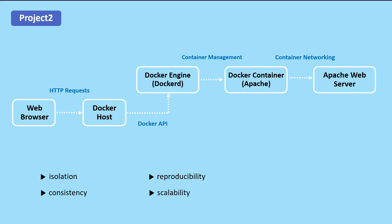Fourth is scalability. Docker containers can be easily scaled horizontally to handle increased traffic by deploying multiple instances of the same container. Fifth is security. Docker containers are more secure than traditional servers because they provide an isolated environment, making it harder for attackers to compromise the host machine or other applications. Last is flexibility. Docker provides a flexible platform for building, deploying, and managing applications, allowing developers to choose the best tools and technologies for their needs.